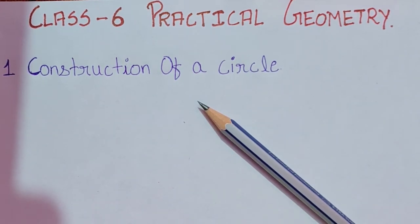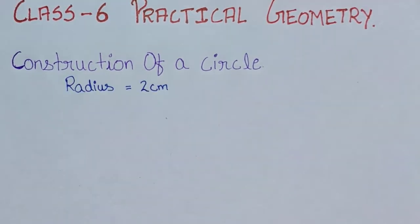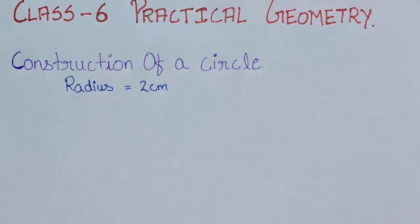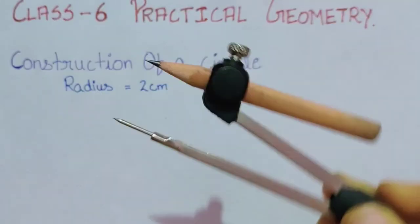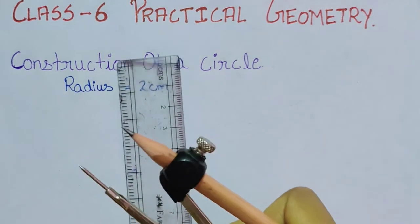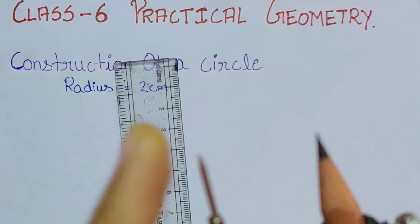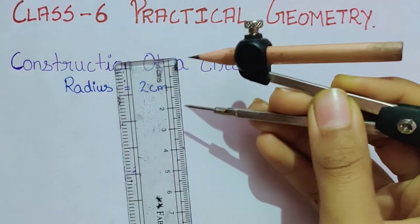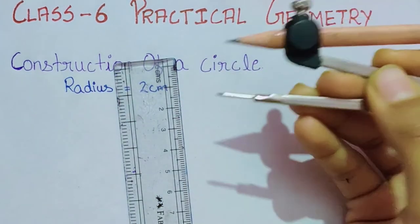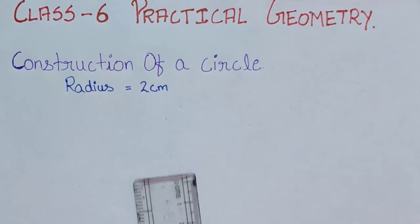Suppose we have to construct a circle of radius 2 centimeters. The first step will be measuring the compass as 2 centimeters. We take the scale and place the pointed tip of the compass on 2, measuring from 0 to 2 centimeters.